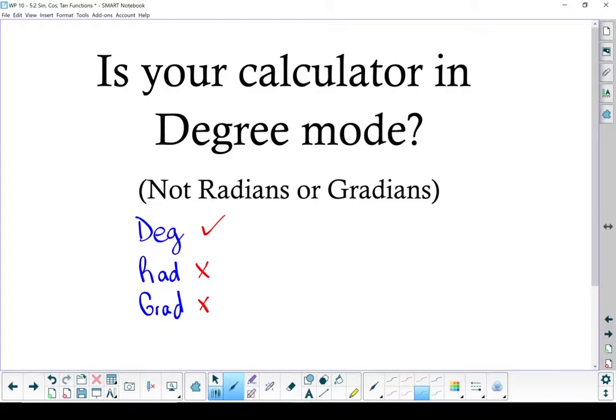If it's in the wrong mode, look for the button to change it. It's normally listed as D-R-G. That is the button that normally switches it into degree mode.